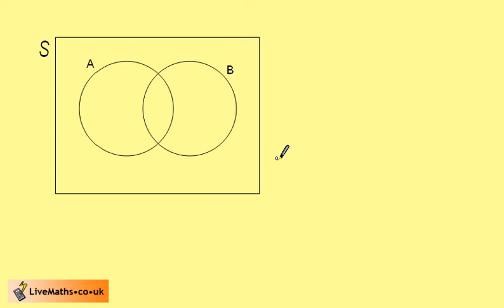We're now going to look at how to use the Venn diagram for probability. Instead of having a universal set, the rectangle represents something that we call the sample space.